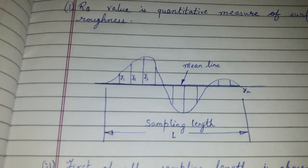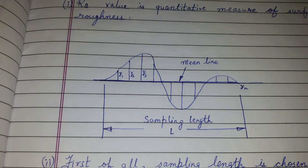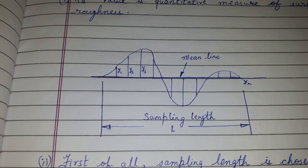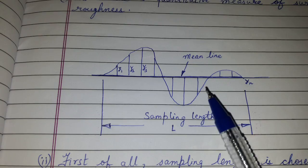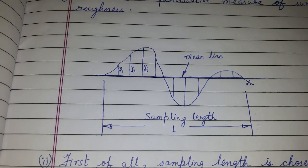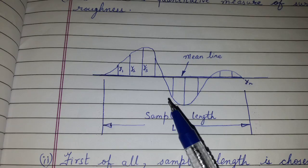Hi friends, today's topic of discussion is Ra value. Ra value is the quantitative measure of surface roughness. If we touch any surface, it will have some ups and downs. So in Ra value, the profile of the surface is plotted.